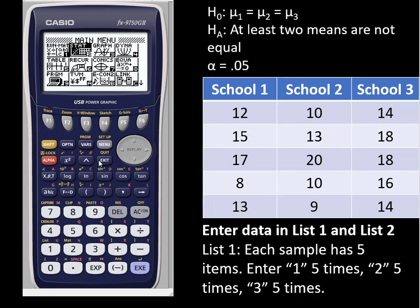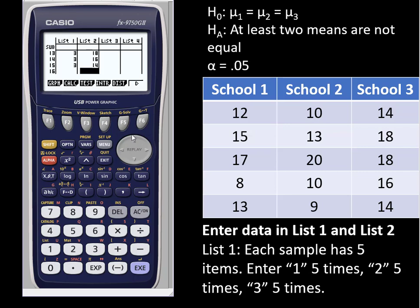We need to enter the data into lists and then we can run ANOVA. I'm going into the stat menu and assuming that you have data in lists already, click the F6 button to get to DEL-A and click F4 and then F1 to clear the list. Do the same if you have any data in list 2 so that you can start fresh.